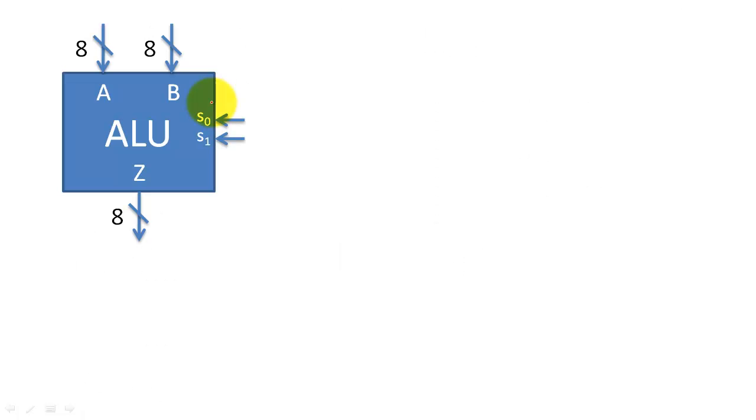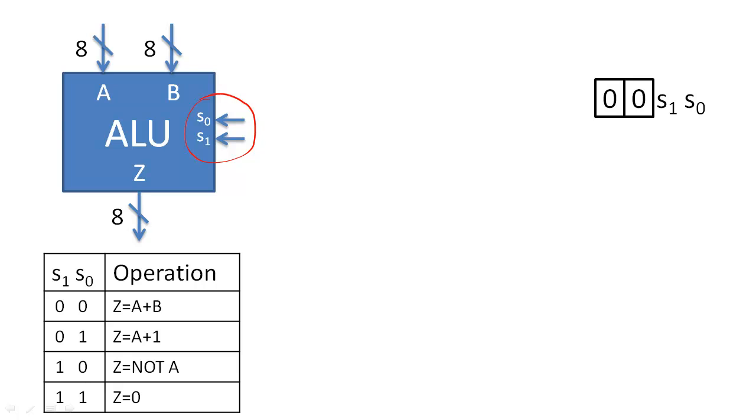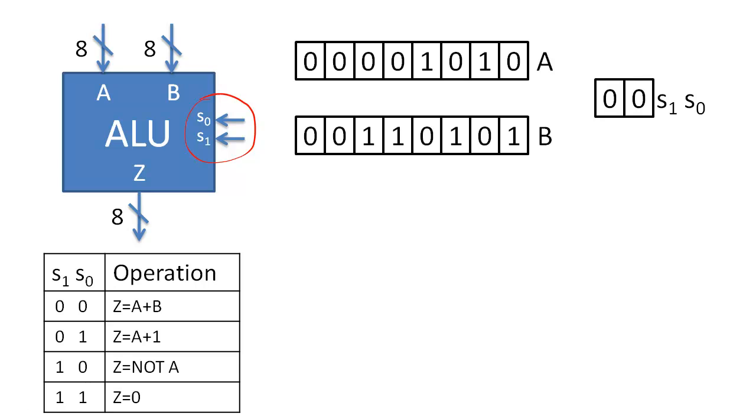Suppose that we have an ALU that receives two control bits. Because there are two control bits, we can encode four operations for the ALU to perform. I have chosen two arithmetic operations and two logic operations for this example. The ALU receives inputs from two 8-bit registers and sends out eight bits of information back to the register file.